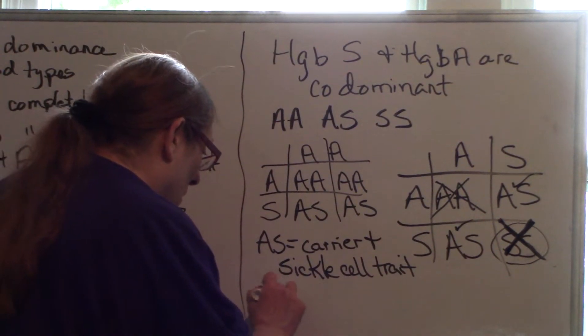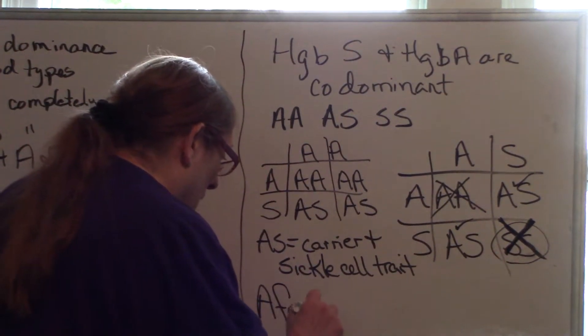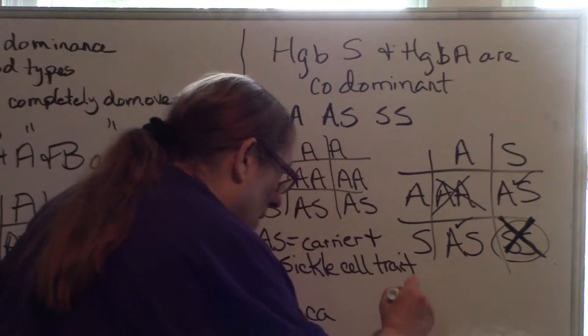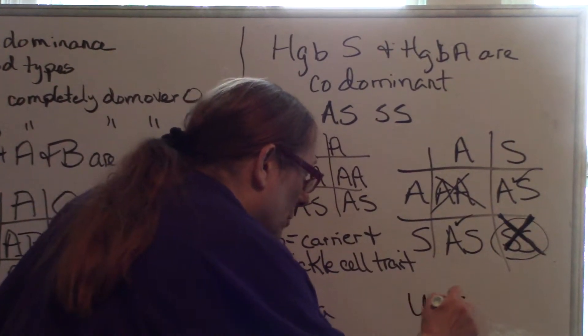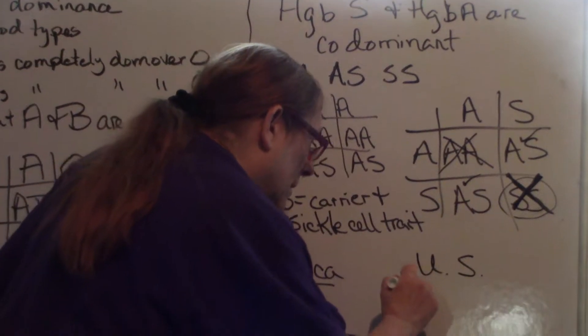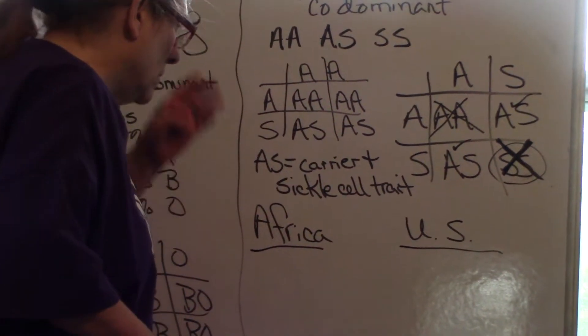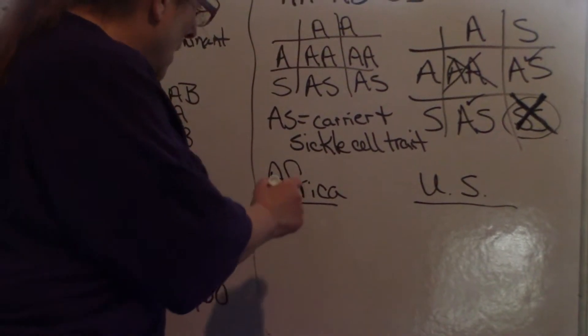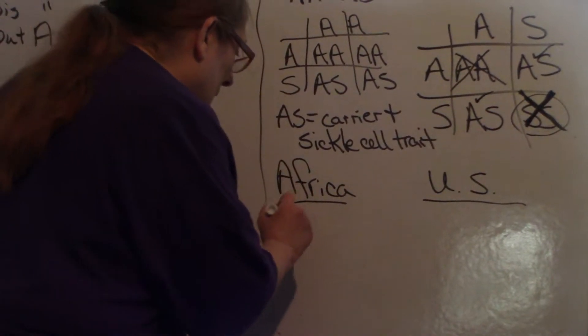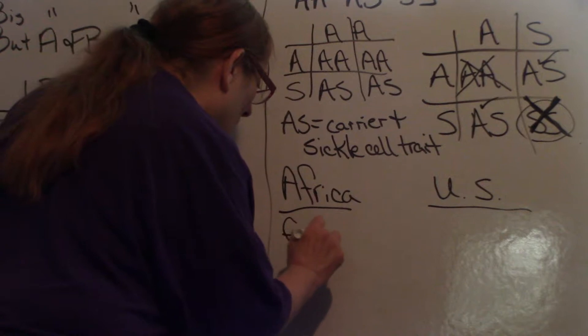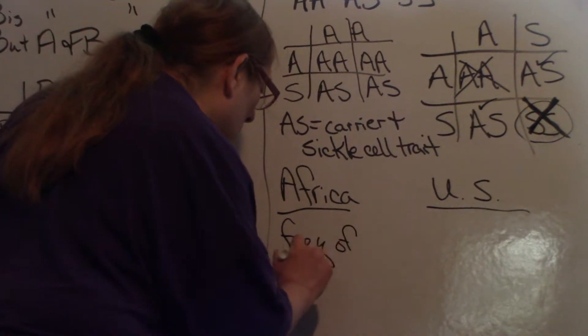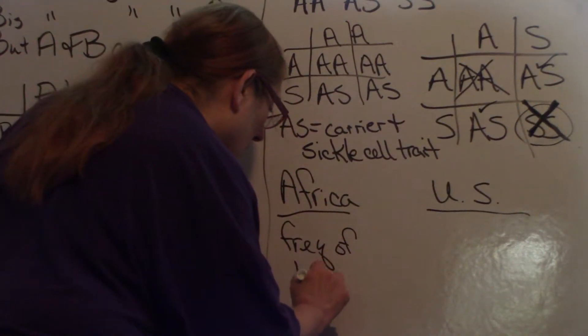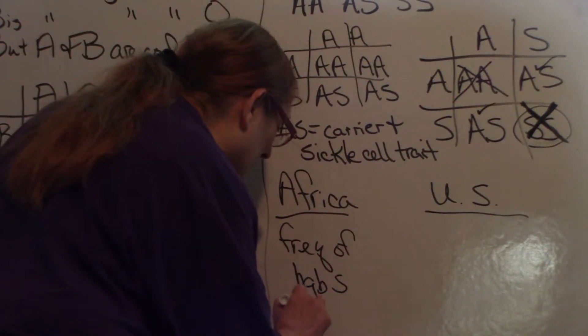If you look at people, black people in Africa, if you look at the frequency of hemoglobin S, it's still relatively high.